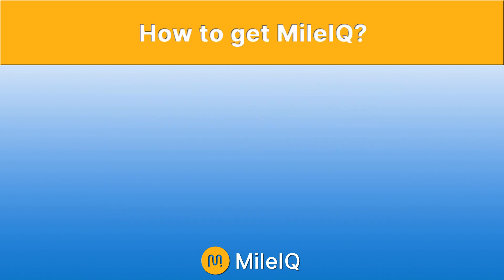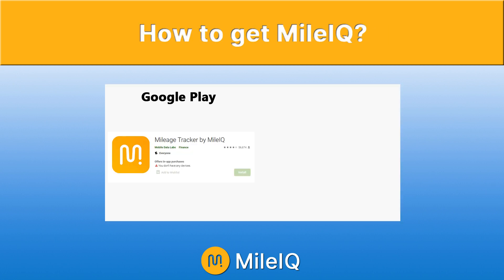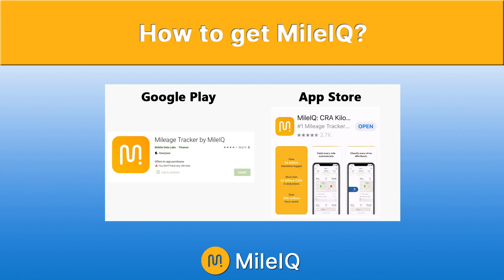To get MileIQ on your Android phone, simply head over to your Google Play app, look for MileIQ and download it. Similar process for an Apple iPhone — just open up the Apple store, look for MileIQ, download it and you are good to go.